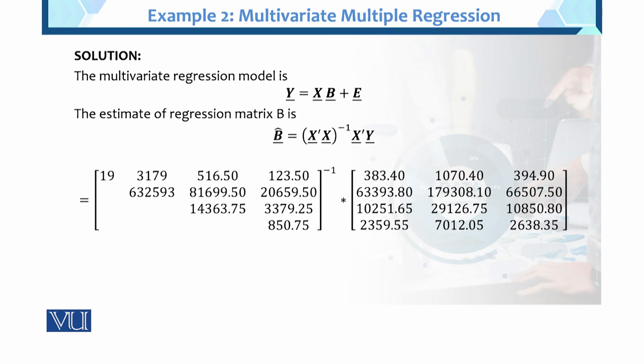Now here is the solution. This is the multivariate regression model: Y = XB + E. Why are these bold and capital? Because Y, X, B, E are all matrices, that's why they're bold and capital. The estimator of regression matrix B is B-cap, which equals (X'X)⁻¹X'Y. What is given? We need to find B-cap. Given is X'X, and we need to find its inverse. Also given is X transpose Y.